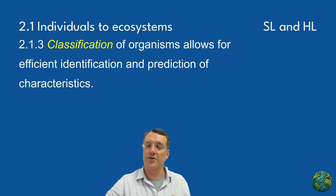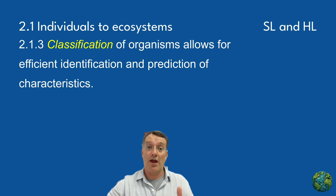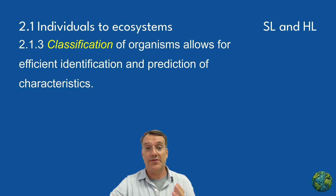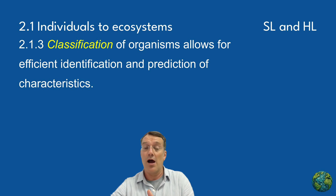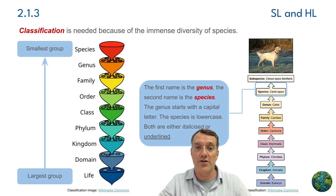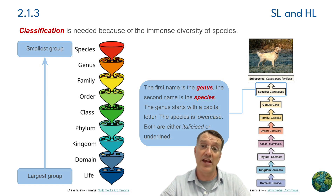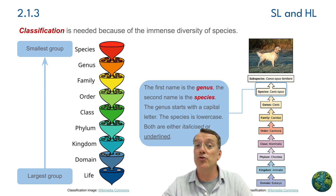To manage the immense diversity of life on Earth, scientists use classification systems. This systematic organization allows for the efficient identification and prediction of characteristics among different organisms. Taxonomists are scientists who work specifically on classification of life on Earth, and they use different tools to identify organisms.